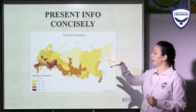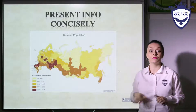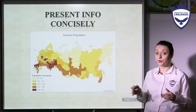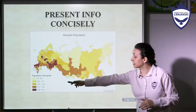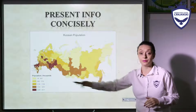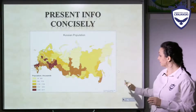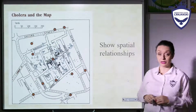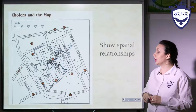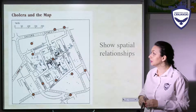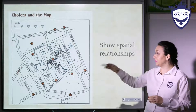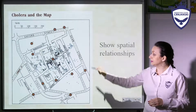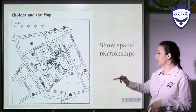The Russia population map shows how many people live in each region. You can see different colors and hues, and the relationship between the numbers and amounts. To show spatial relationships, here is an example of a map representing cholera — showing a place, country, or streets and the division between the data.